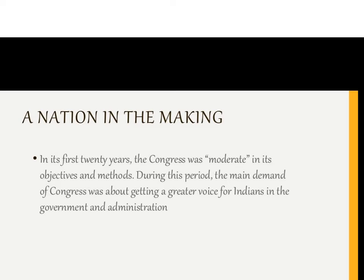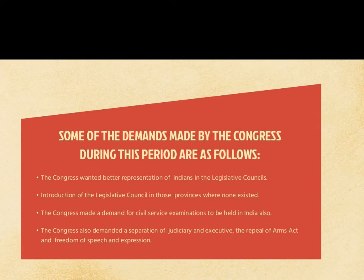In the first twenty years, the Congress was moderate in its objectives and methods. The main demand was for a greater voice for Indians in the government and administration. Key demands included greater representation of Indians in the legislative councils, introduction of legislative councils in provinces where there were none, civil service examinations to be held in India rather than in foreign countries, separation of the judiciary and the executive, repeal of the Arms Act, and freedom of speech and expression.